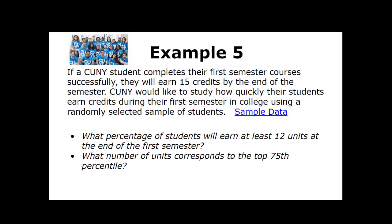Example five gives us an opportunity to go from raw data all the way through to using technology to answer the questions. If a CUNY student completes their first semester courses successfully, they'll earn 15 credits by the end of the semester. CUNY would like to study how quickly students earn credits during their first semester using a randomly selected sample. The first question: what percentage of students will earn at least 12 units? What number of units corresponds to the top 75th percentile?